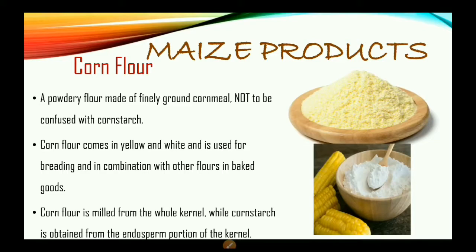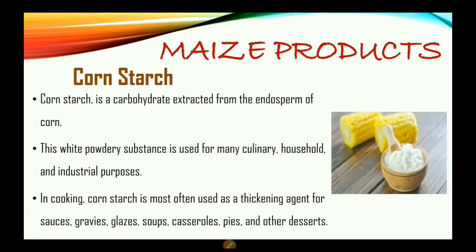Corn flour is a powdery flour made of finely ground cornmeal — not to be confused with cornstarch. Corn flour comes in yellow and white and is used for breading and in combination with other flours in baked goods. Corn flour is milled from the whole kernel, meaning the entire corn grain, while cornstarch is obtained from the endosperm portion of the kernel.